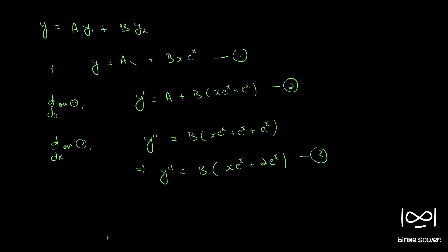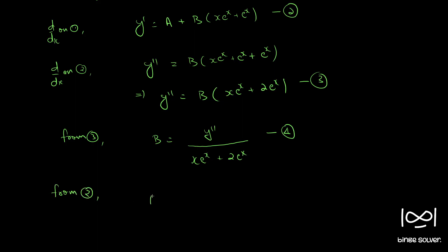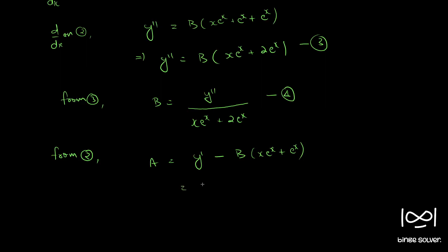From equation 3, we can write b = y'' / (xe^x + 2e^x). This is equation 4. Now we can use equation 2 to find a. From equation 2, we have a = y' - b(xe^x + e^x), so a = y' - [y'' / (xe^x + 2e^x)] · (xe^x + e^x).